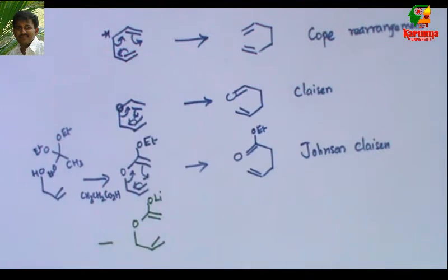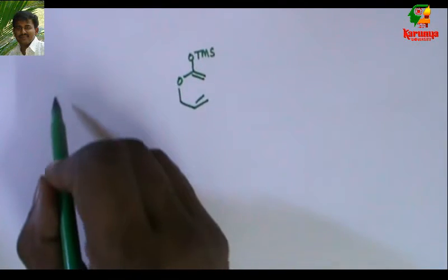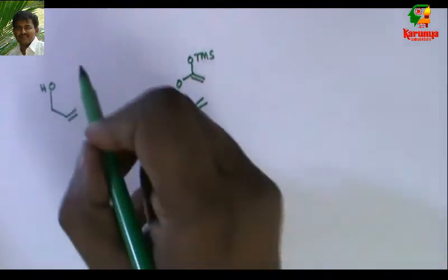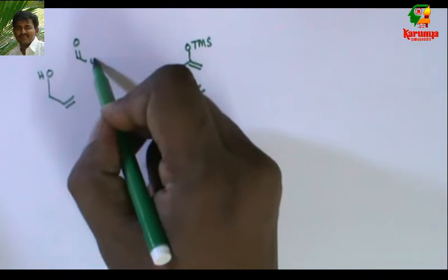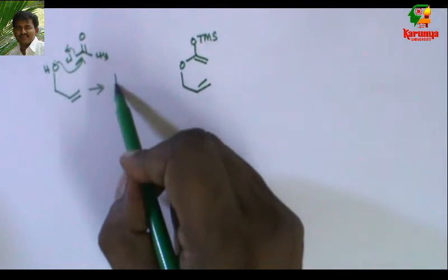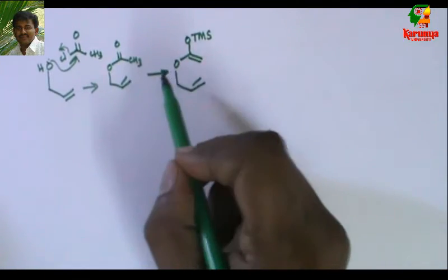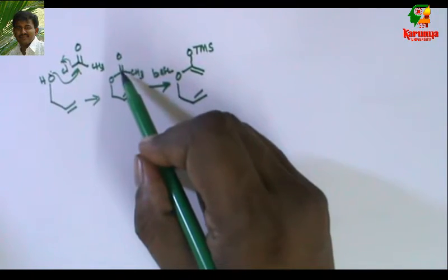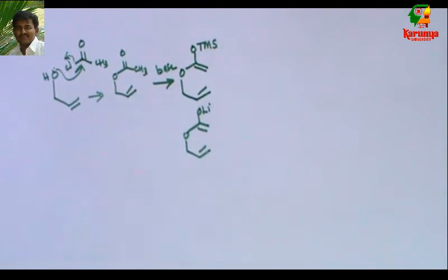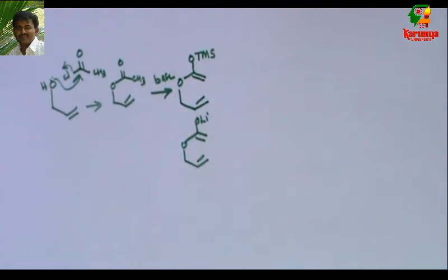There is one more modification: Ireland-Claisen rearrangement. In this, instead of OEt there will be O-Lithium or O-TMS. This can be prepared from allyl alcohol by reacting with acetyl chloride — the alcohol undergoes acylation to give allyl acetate. Then a base abstracts the alpha proton and enolizes to give the enolate, which may be protected as a trimethylsilyl ether, or as such it can undergo 3,3-sigmatropic rearrangement.